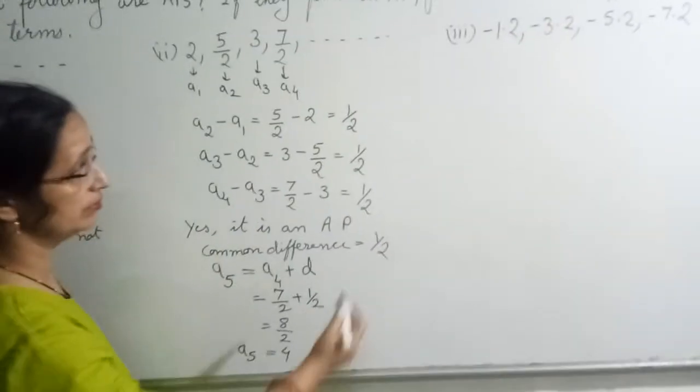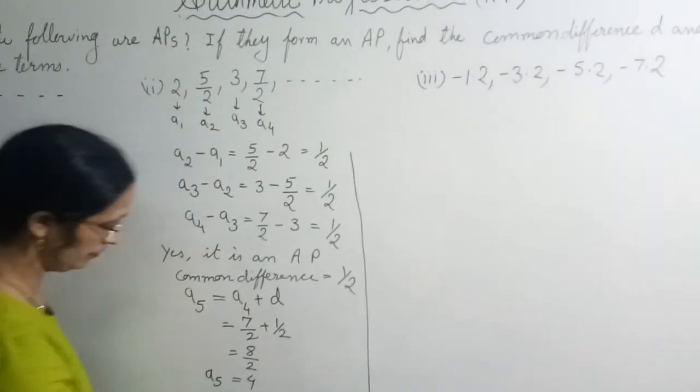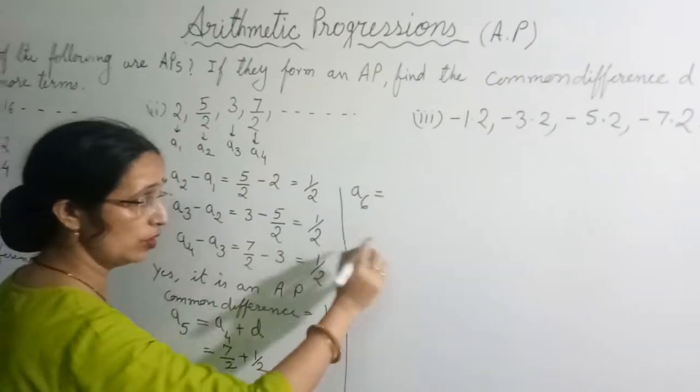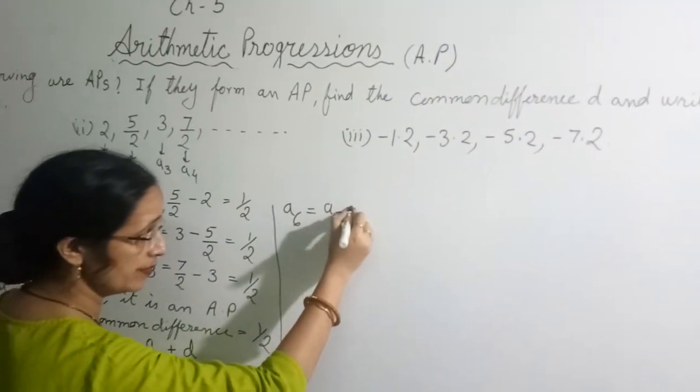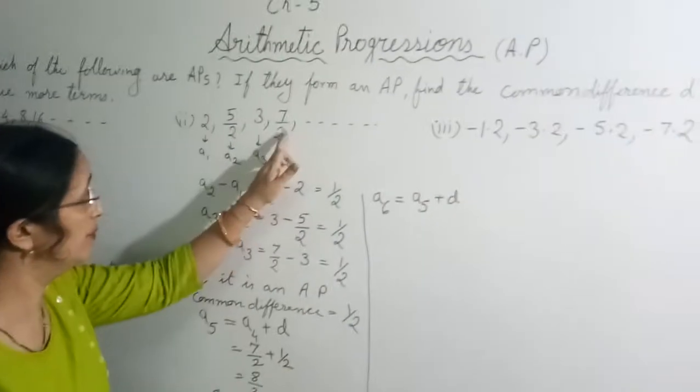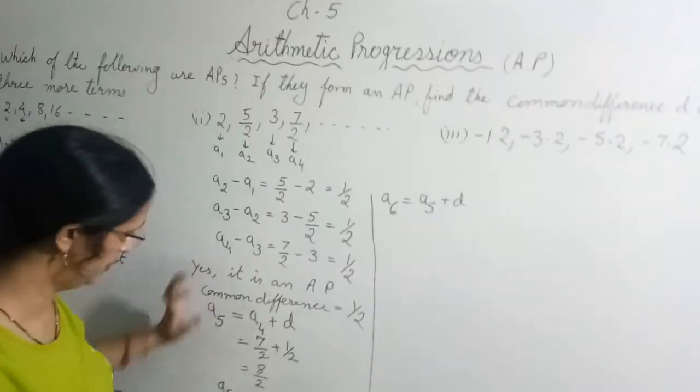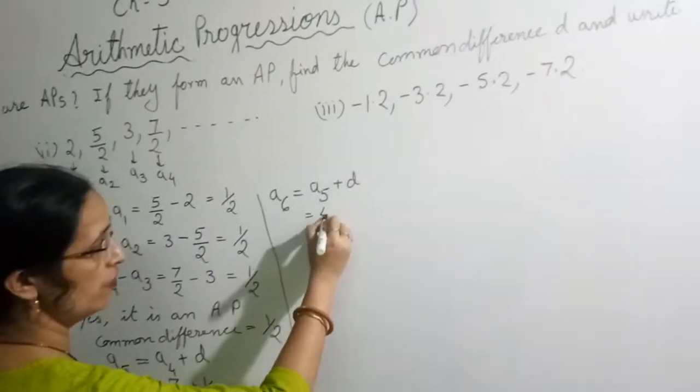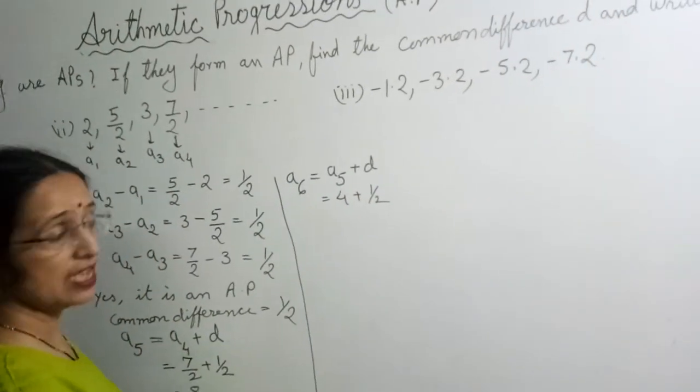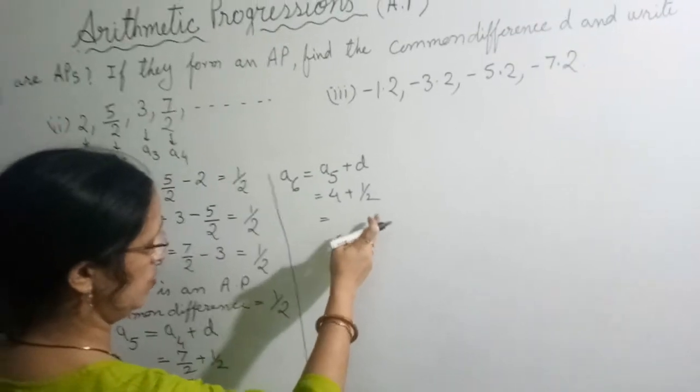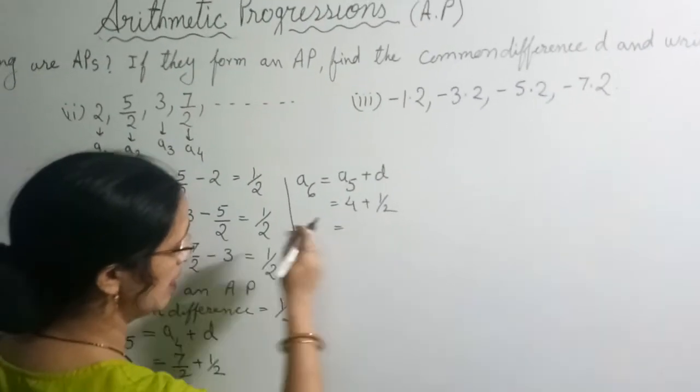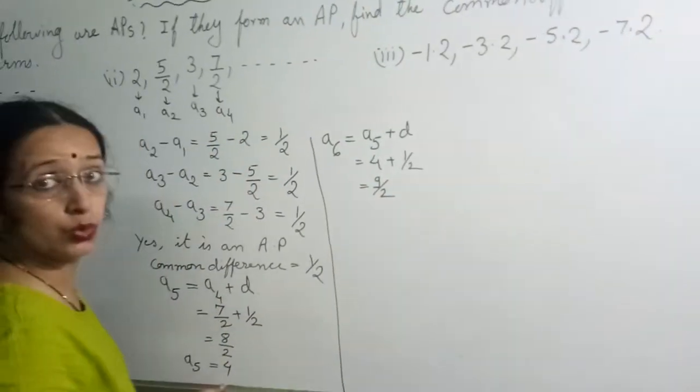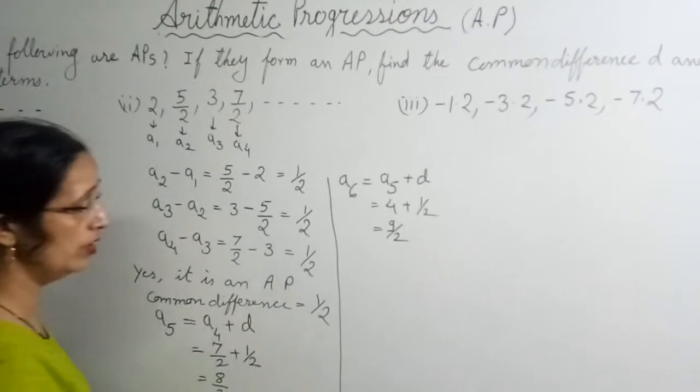Similarly let's solve here. 5th term is done. Now we need to find 6th term. Again logic is, in the previous term we are adding the common difference. So fifth term we have found as 4. So we will write here 4 plus common difference is half. So what it will be? It will be either you take LCM and solve or use the logic. So it will become 9 upon 2. So 6th term will come 9 upon 2.